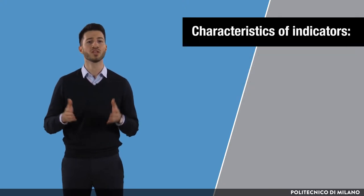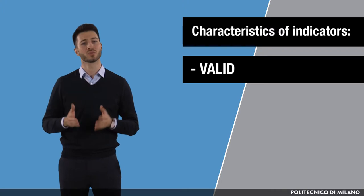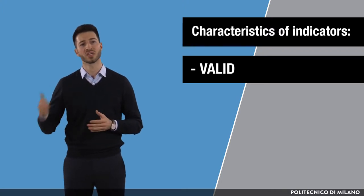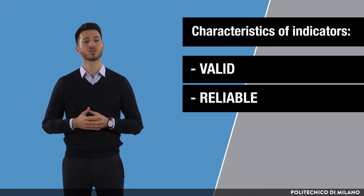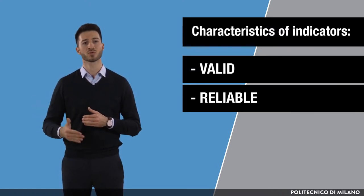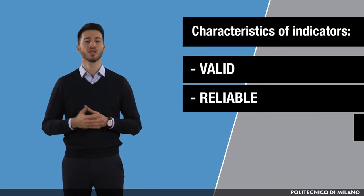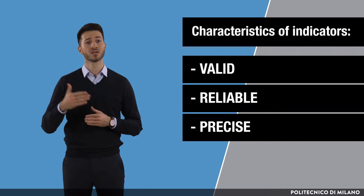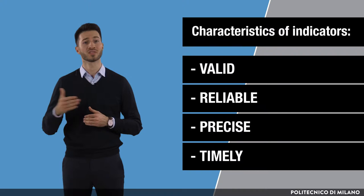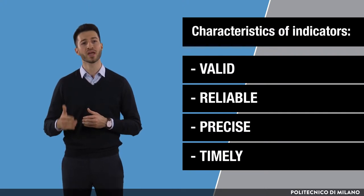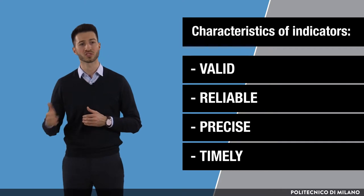Key characteristics of good indicators are: indicators should be valid, meaning they should represent an accurate measure of a behavior, practice or a task. Indicators should be reliable, meaning they should be consistently measurable over time in the same way by different observers. Indicators should be precise, clearly and unambiguously defined. And indicators should also be timely, as they should provide a measurement at time intervals relevant and appropriate in terms of program goals and activities.